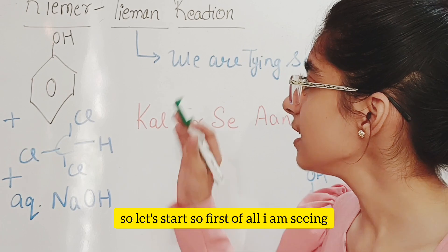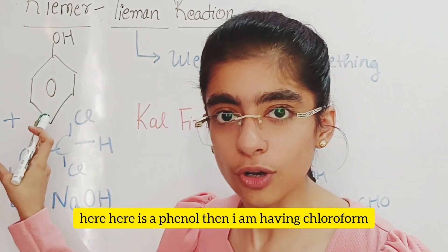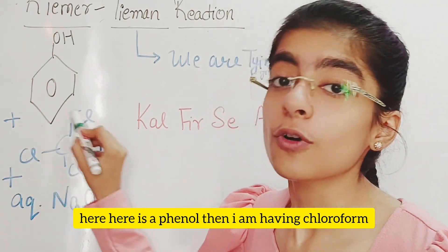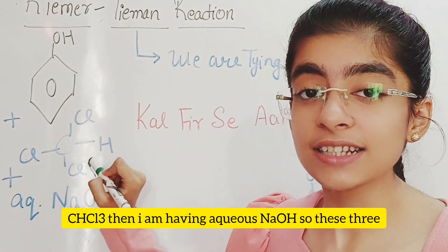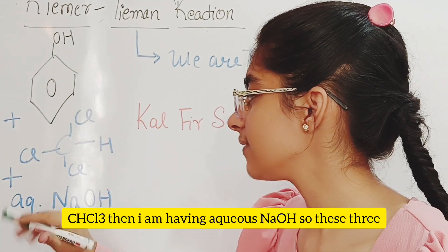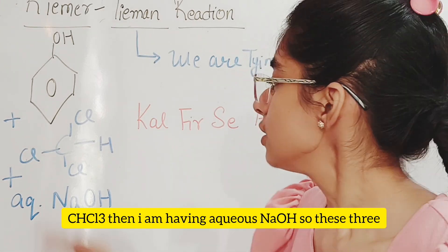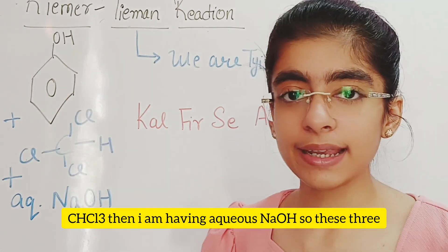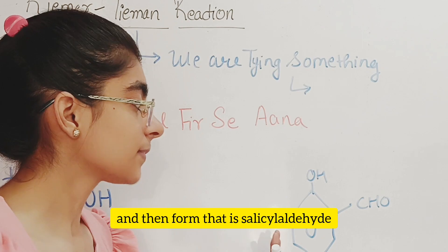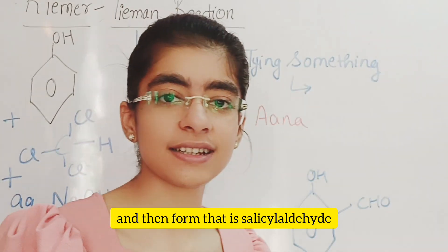So first of all, here is a phenol, then I have chloroform CHCl3, then I have aqueous NaOH. These three react and form salicylaldehyde.